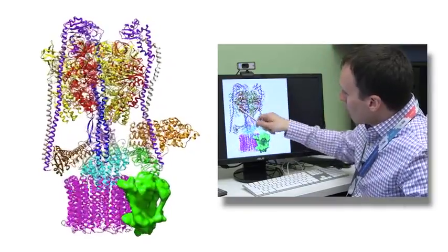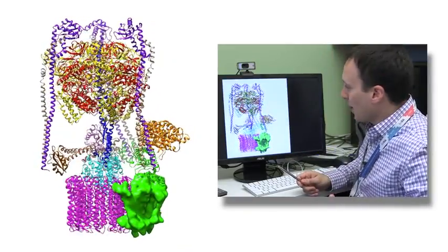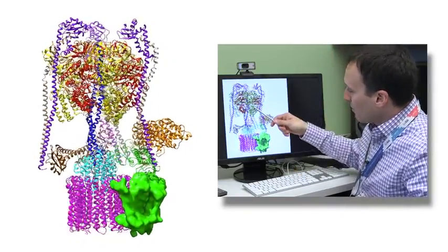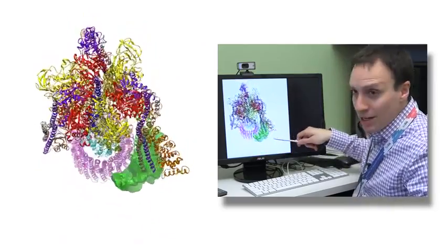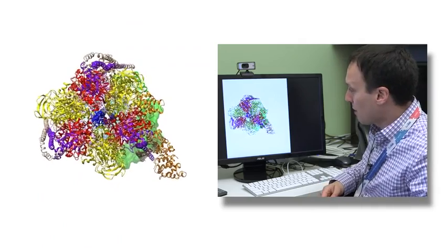We know that this region of the molecule is the part that uses energy, chemical energy, and it converts that chemical energy into rotation of this rotor. This portion of the molecule will sit in the membrane, and by spinning, it will pump protons across the membrane.